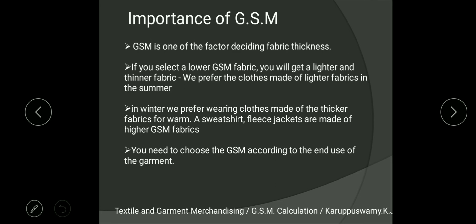Now let us move to the importance of GSM. GSM is one of the key factors deciding fabric thickness. If you select a low GSM fabric you will get a lighter, thinner fabric because the openness in the fabric increases. Conversely, a higher GSM gives a heavier fabric. Based on your end use you need to select the appropriate GSM — for example, in winter we prefer high GSM fabrics like sweaters, while in summer we prefer lighter fabrics with lower GSM.